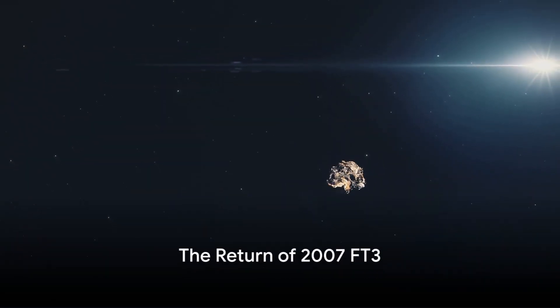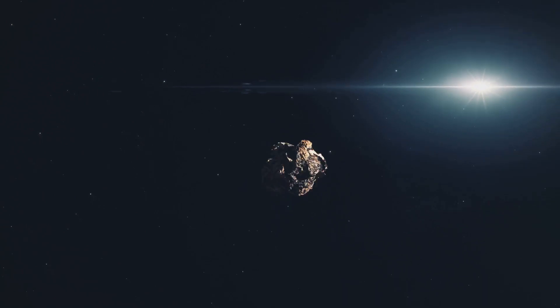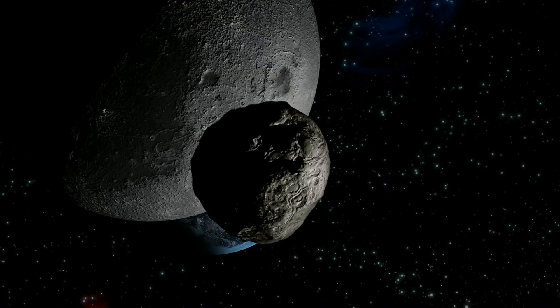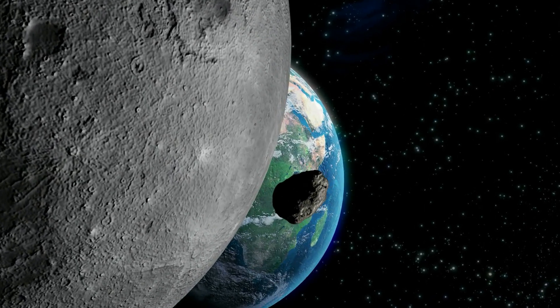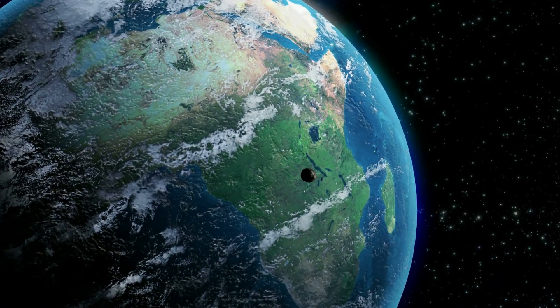But hold on to your seats because NASA has dropped a bombshell. They're predicting that a once-missing asteroid known as 2007 FT3 might be heading our way as early as this year. The last time we saw this celestial wanderer was back in 2007 before it mysteriously vanished.